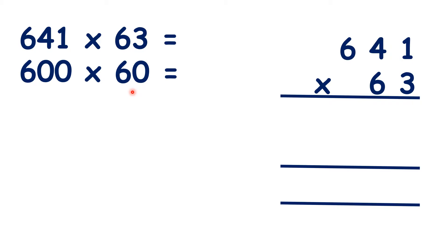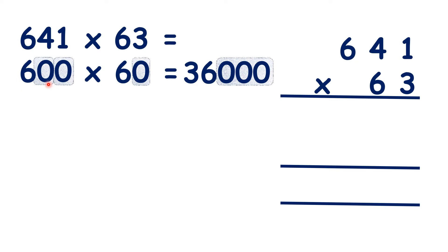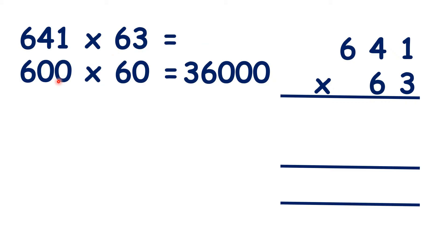So what is 600 times 60? We have 36,000, because 6 times 6 is 36. And we know that if we have a total of three end zeros in our question, we need three end zeros in our answer. But is 36,000 an underestimation or an overestimation? Do you think our actual answer will be larger than 36,000? Well, to get 600 times 60, we rounded both numbers down, so that means our actual answer will be larger than 36,000.